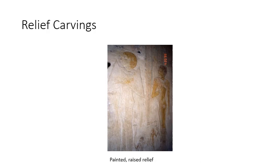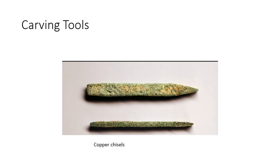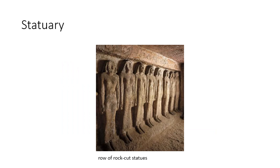This is sunken carving, where you see the lines go in. And then there's raised relief carving, which is often painted. What's the difference? When would they do one, when would they do the other? What does it have to do with Egyptian life? Maybe I'm interested in the tools that I find when I'm excavating. What do these tools and the changes in what the tools are made of tell me about life? These are all different perspectives.